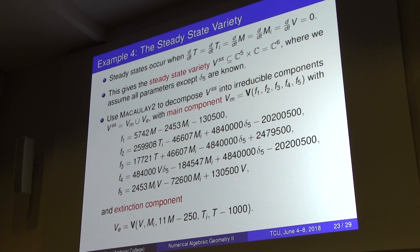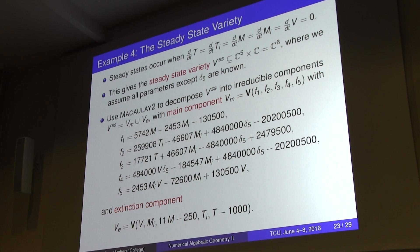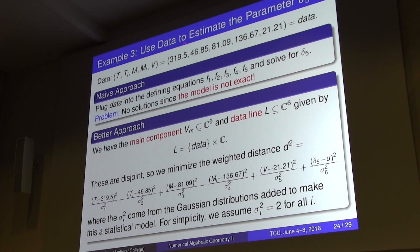The question is: how do we use this model to find delta_5? The answer is we use data — measurements for all five variables. The totally naive approach: just plug the data into the system of equations and solve for delta_5.